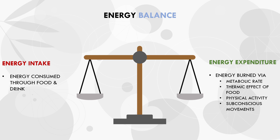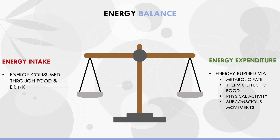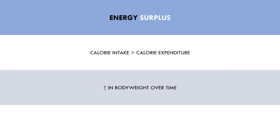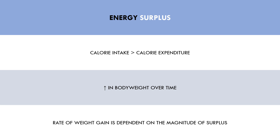There are three general states of energy balance we can be in at any given point in time. The first is an energy surplus — this is when we consume more calories per day than we expend. An energy surplus will result in weight gain over time, and the magnitude of the surplus will determine the rate of weight gain. If we eat in a larger surplus we gain weight faster, and in a more conservative surplus, our rate of weight gain will be slower.